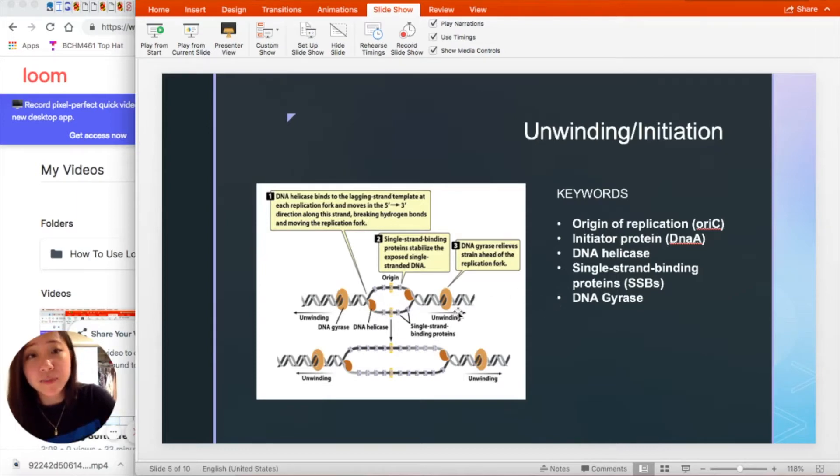Single strand binding proteins bind to the single-stranded DNA to keep the DNA unwound. And gyrase is a topoisomerase and functions to unwind super coils in front of the replication fork. More specifically, it works to reduce the positive super coil to allow for continuous unwinding.